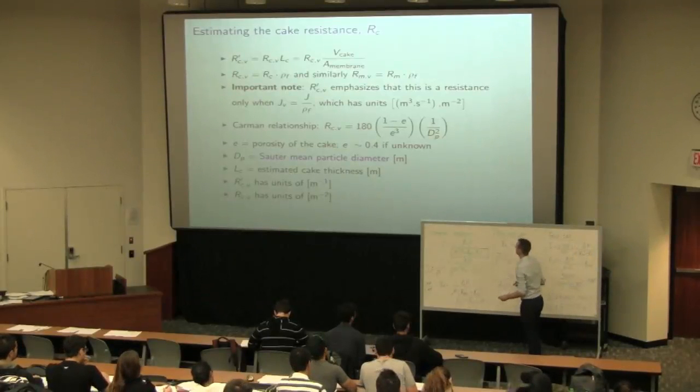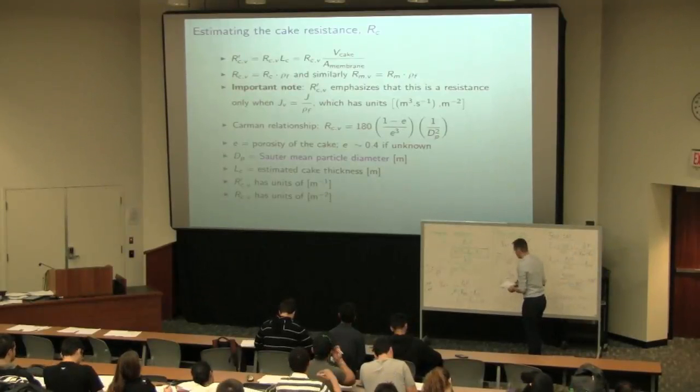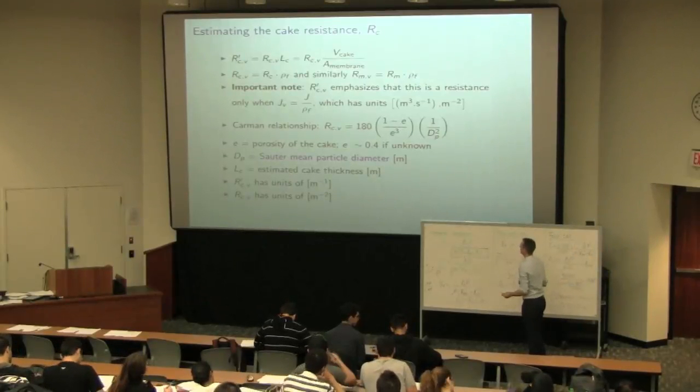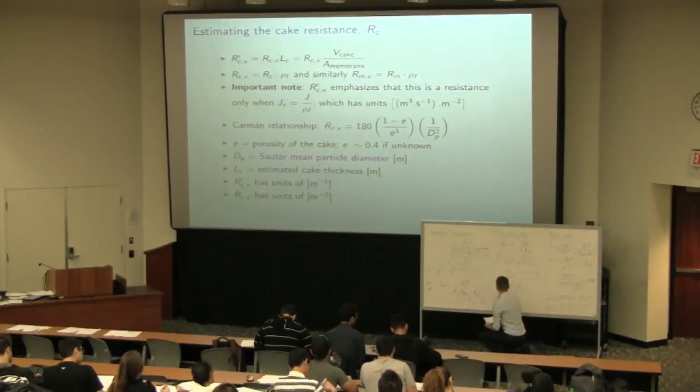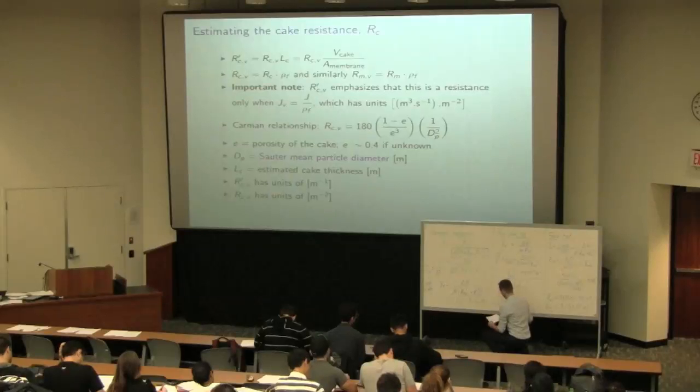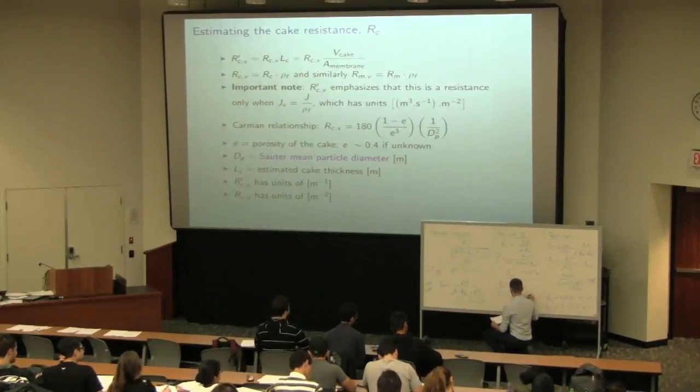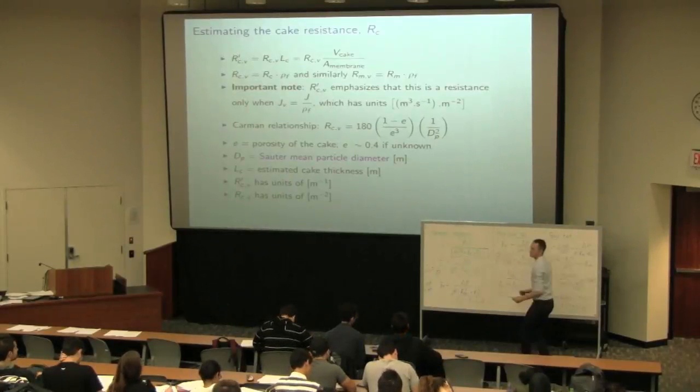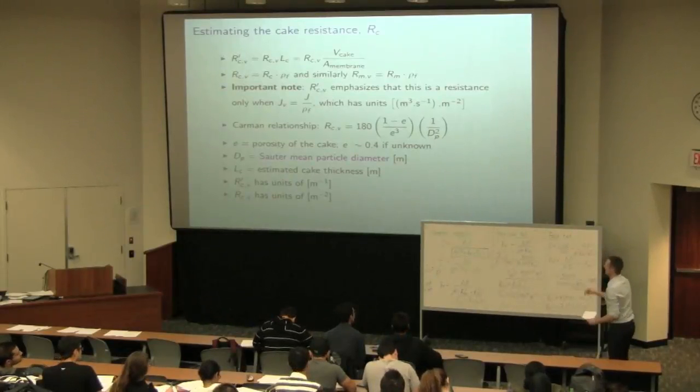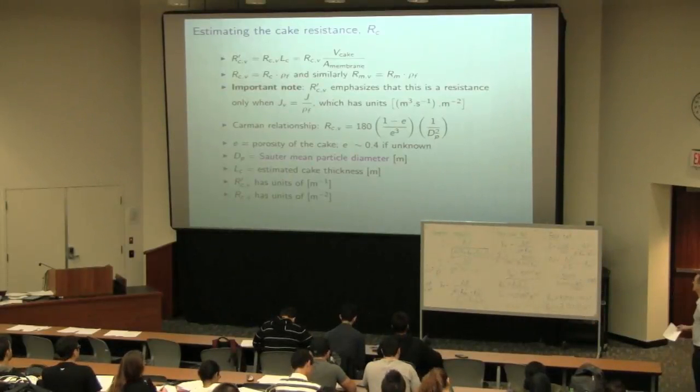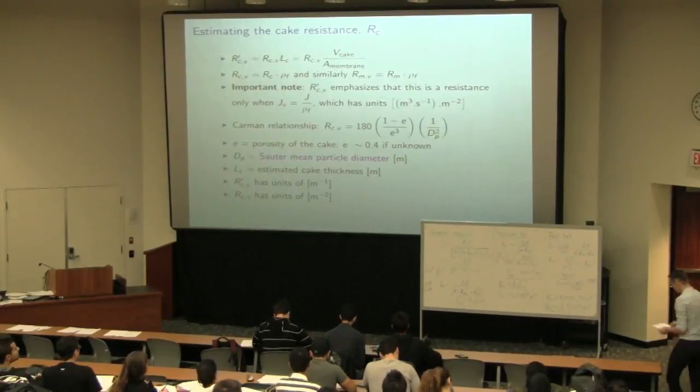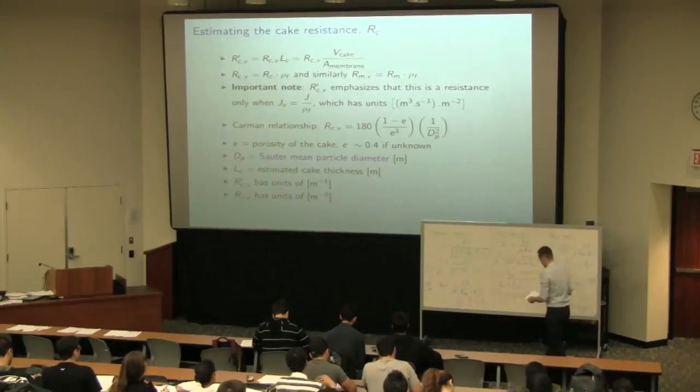So, I'll just put the results up here of using the Carman equation with that known diameter and assuming a porosity of 0.4. You can calculate that RCV from that relationship would be 4.2 times 10 to the 14. And the units, meters squared per that particle size diameter.